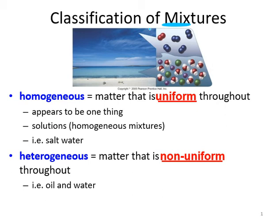When we see only one component — 'homo' means one — if you see only one component or you have a uniform composition throughout the mixture, we call that homogeneous. So only one component is visible.